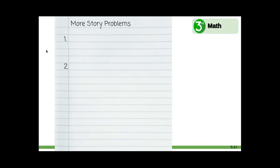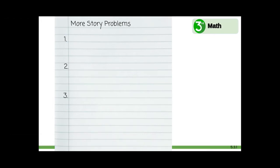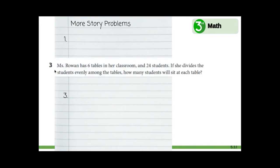Let's look in your notebook on the page that you titled More Story Problems. You have already written one, two story problems. If you still have room on this page, skip a line and write number three. If you need to turn to the next blank page, you can and write number three in the margin. Let's look at our workbook at problem number three.